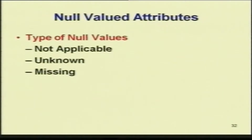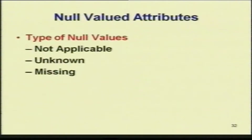There are three types of null values: not applicable, unknown, and missing. Not applicable means it cannot have a value. Unknown means I know there is a value but I do not know what it is. Missing means I know there is a value but it has not been found. These are null valued attributes.